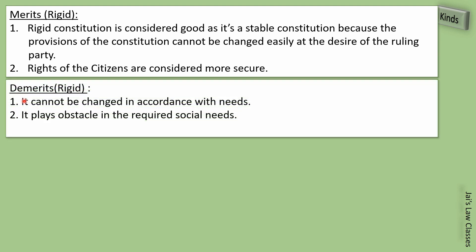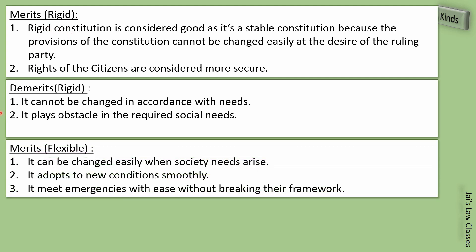Demerits of rigid constitution: it cannot be changed according to needs — changing it according to necessity is not easy. It also plays an obstacle in required social changes — when society's ways change, bringing corresponding changes to the law is difficult. Overall, demerits are few. Merits of flexible constitution: it can be changed easily when societal needs arise, and it adapts to new conditions smoothly.